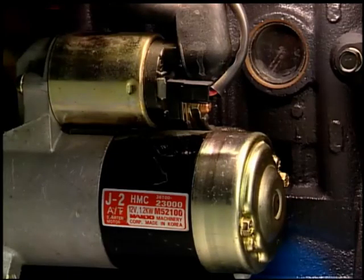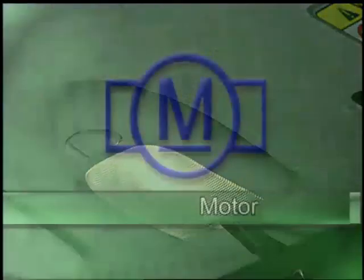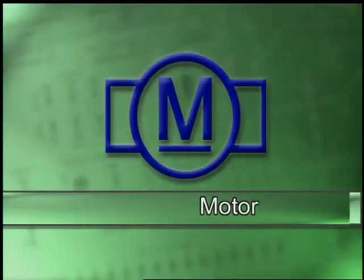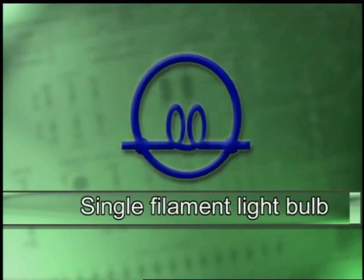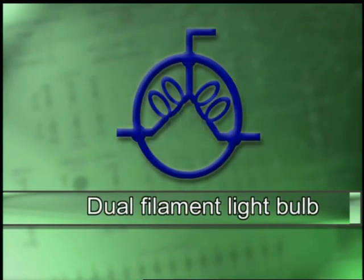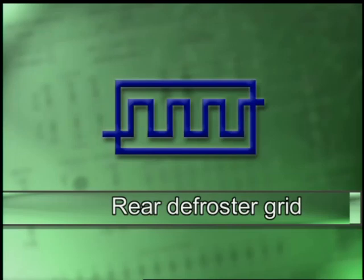The common symbols for the loads that use electrical power are the symbols for motors and light bulbs. A motor is shown in the wiring diagrams as the letter M inside a circle, with two smaller boxes on each side. Single filament light bulbs are shown as a coil of wire inside a circle, while dual filament bulbs have two coils of wire inside a circle. Other devices such as rear window defogger grids are usually shown as square or rectangular boxes that are labeled.